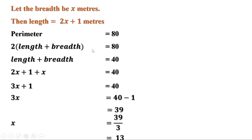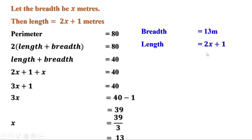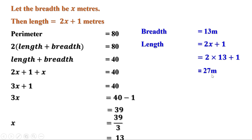x = 13 means breadth = 13 meters. Length = 2x + 1 = 2×13 + 1 = 26 + 1 = 27 meters. Verification: perimeter = 2 × (13 + 27) = 2 × 40 = 80. The result is correct.